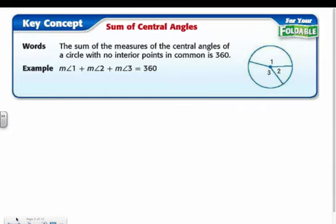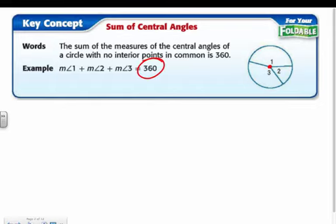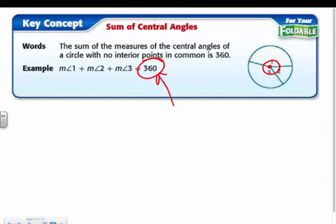If I added up all the angles of a circle with the vertex at the center — so if I added angle one, two, and three — they have to add up to 360 degrees. Because a circle goes all the way around 360 degrees, that same thing works for the angle measures. If I add up all the angles — angle one, angle two, and angle three — they make the circle, so they all add up to 360 degrees.